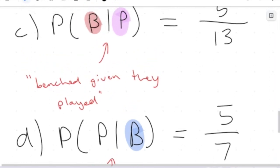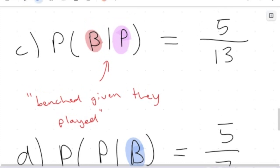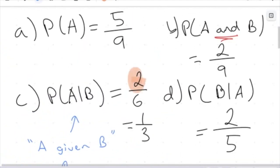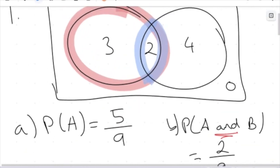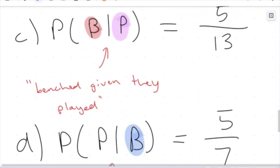You may have noticed a pattern: when we look at these types of conditional probabilities, the numerator was the same in both cases — because we have the same number in the overlapping section. No matter which way we go, I'm going to get a constant overlap which will be my numerator when I look at conditional probabilities. This is how we can apply the information we learned from the last video to questions involving both two-way tables and Venn diagrams. Thank you so much for joining me in this video and I'll see you next time.